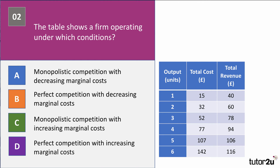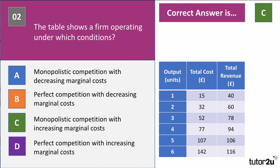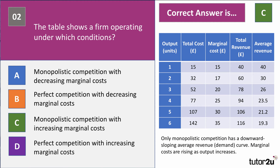Question two: the table shows a firm operating under which conditions? You have data on output, total cost, and total revenue. The correct answer is C — monopolistic competition with increasing marginal costs. Working the table, marginal cost is rising (15, 17, 20 and so on), so it must be C or D. Crucially, the average revenue curve is falling — price per unit falls as output goes up — so the firm must be operating in imperfect competition. Answer is C.